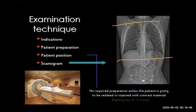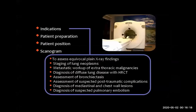If you want to scan the abdomen, you scan from above the diaphragm until the pelvis or including the pelvis, according to the region of interest. There are some indications for using CT scan — we don't use it routinely because of radiation hazards. Indications include: to assess equivocal plain X-ray findings, for staging of lung neoplasm, for metastasis workup, for extra-thoracic malignancies, and to diagnose diffuse lung disease or interstitial lung disease using high-resolution CT scan, which is usually non-contrast.